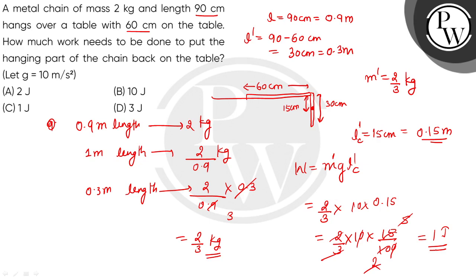So the work done to put the hanging part of the chain back on the table is 1 Joule, and option C is the correct answer. To recap: the hanging part was 30 cm, its mass was 2/3 kg, and the center of gravity was at 15 cm = 0.15 m from the table, giving W = 1 Joule.